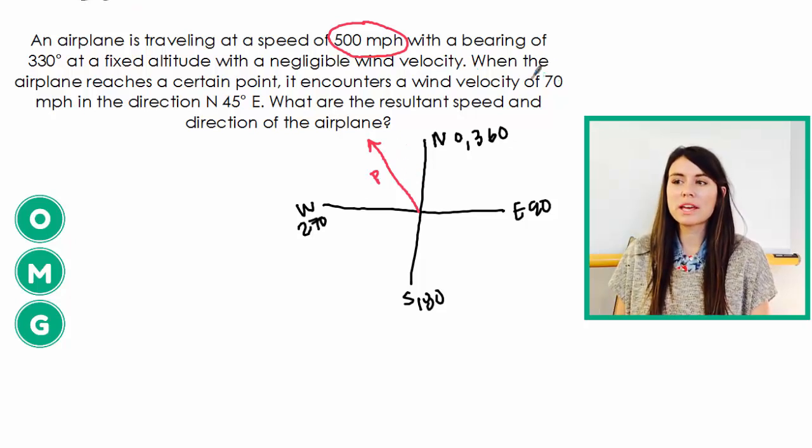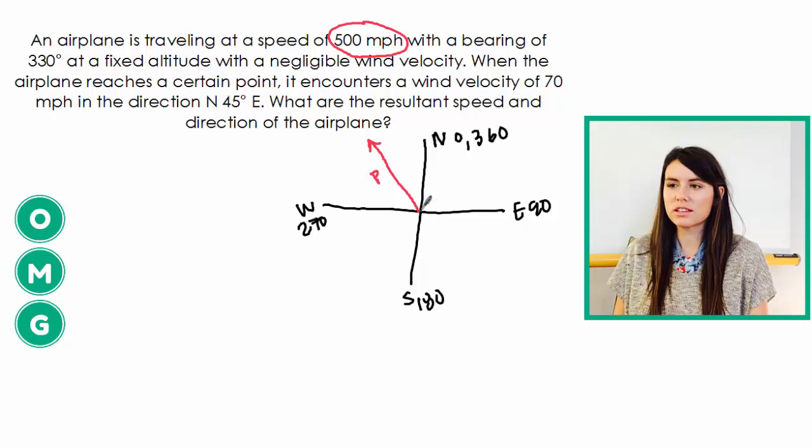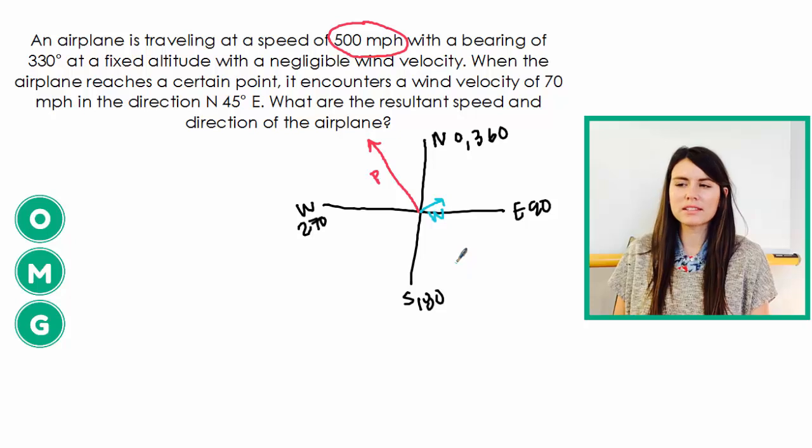And then we know the wind has a magnitude of 70 and it's north 45 east. So north and then I go 45 degrees to the east. So that's directly in the middle here. And that's my wind. I'm going to label that as W.